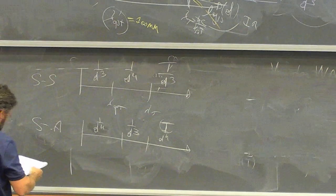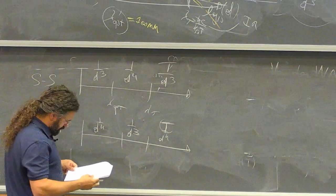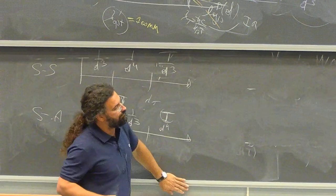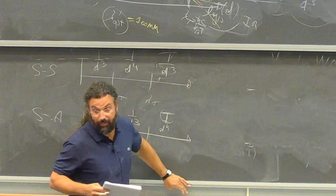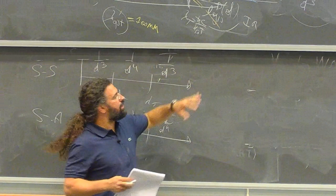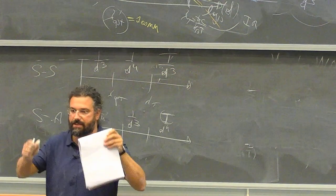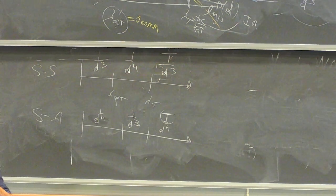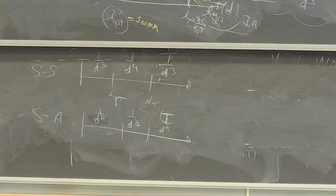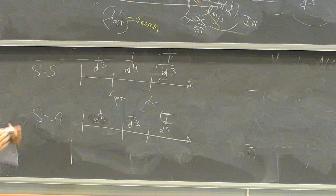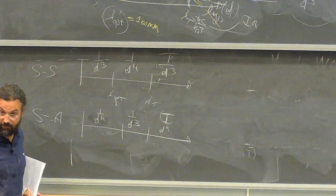These dispersion forces are ubiquitous because all objects have a linear response to electromagnetic fields — there are no objects which do not respond to an electromagnetic field. Whatever object has a polarizability α ≠ 0 will experience these forces. This is why they are universal.